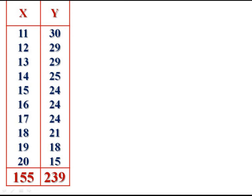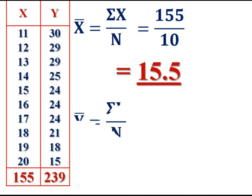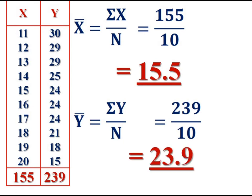Compute its arithmetic mean. Arithmetic mean of x: x bar is equal to sigma x divided by n, that is 155 divided by 10. We get 15.5 as x bar. Then, mean of y variable: y bar is equal to sigma y divided by n, that is 239 divided by 10. We get 23.9. So we have x̄ = 15.5 and ȳ = 23.9.